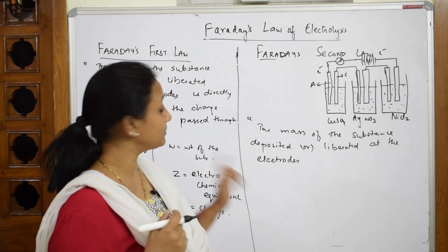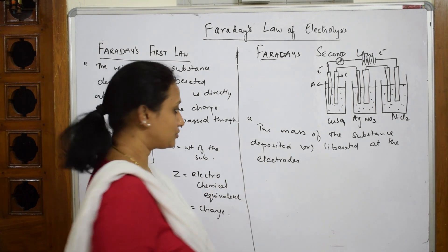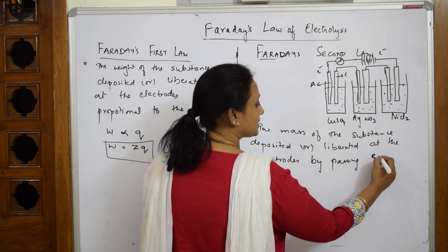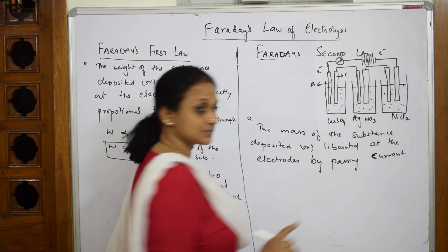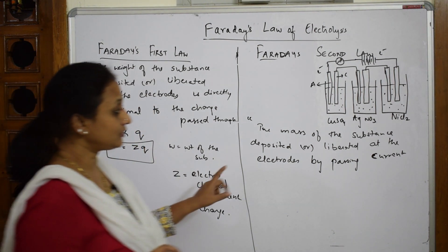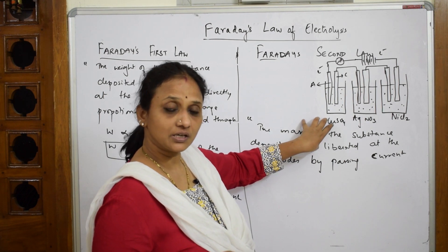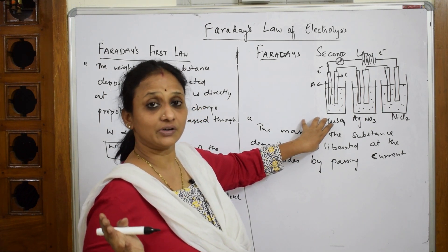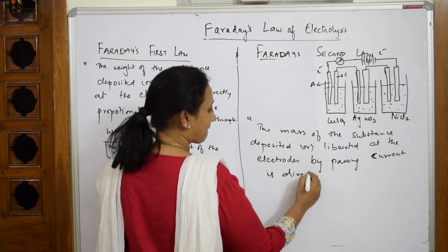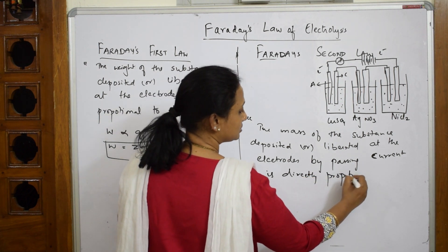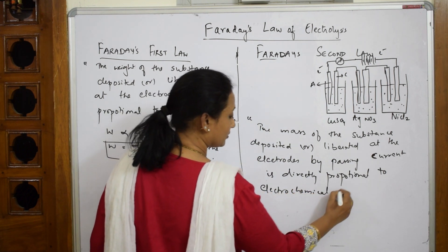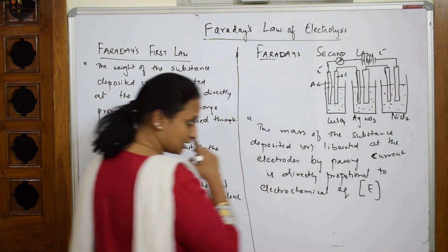The mass of the substance deposited or liberated at any of the electrodes by passing electricity or current — this is important — is directly proportional to the electrochemical equivalent, represented by E. Here we are relating weight of the substance directly to the electrochemical equivalent.